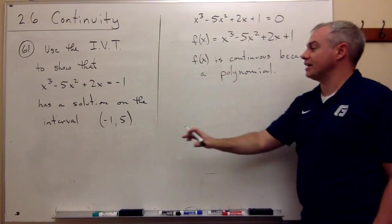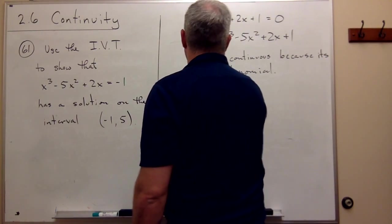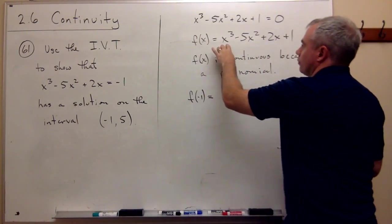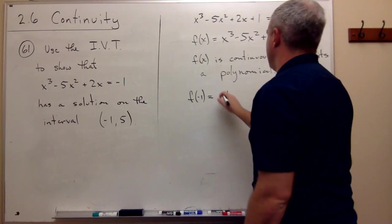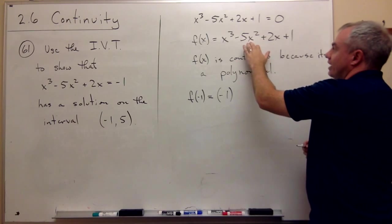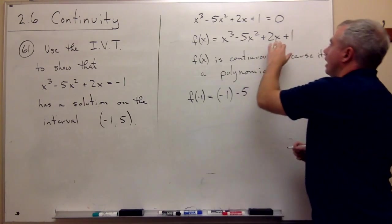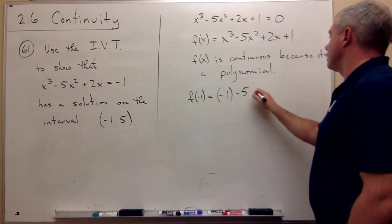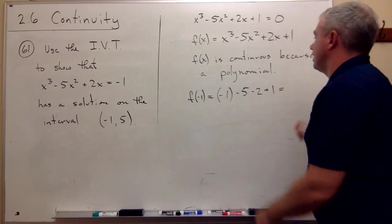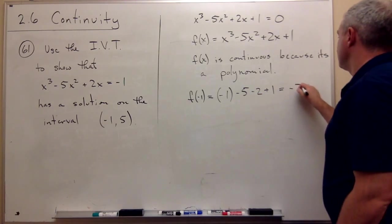So now let's plug in these two values and see what happens. What is f of minus 1? f of minus 1 would be negative 1 cubed, which is negative 1. Negative 5 times negative 1 squared. Well, negative 1 squared is 1 times minus 5 is minus 5. Negative 1 times 2 is negative 2 and plus 1. So we get minus 6, minus 8, minus 7. So f of minus 1 is minus 7.